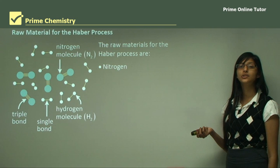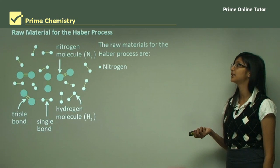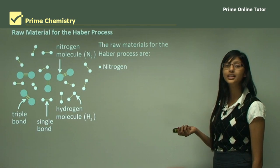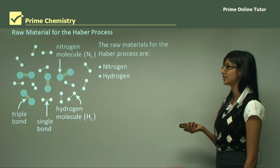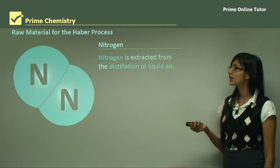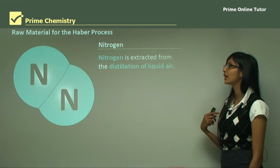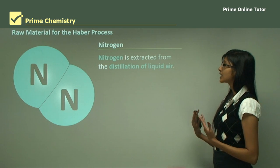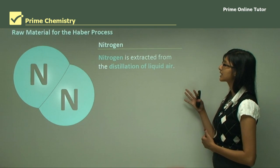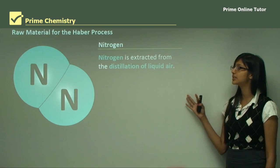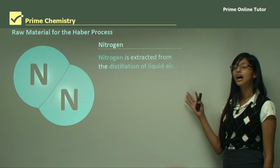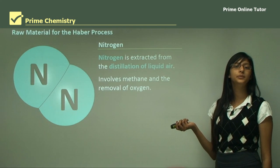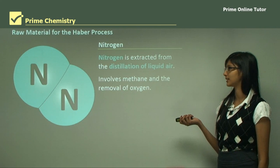The raw materials for the Haber process are nitrogen and hydrogen. Nitrogen is extracted from air by the distillation of liquid air, which involves methane and the removal of oxygen.